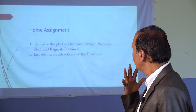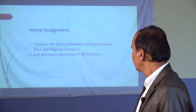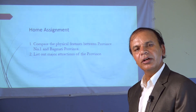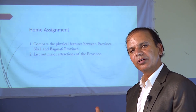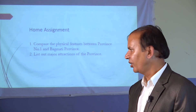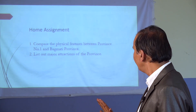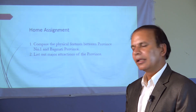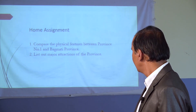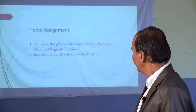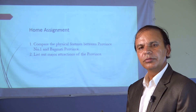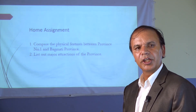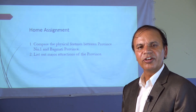We have now discussed Bagmati Province — its physical features, biodiversity, climate, and possibilities for development. It is the most developed province among all seven, because the capital city Kathmandu is located here, where all sorts of amenities and facilities are available, along with fertile soil and industrial areas.